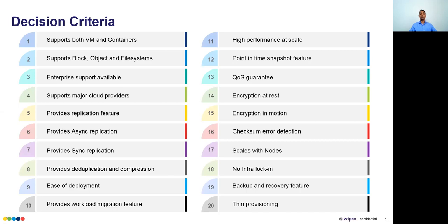Fourth criterion: does it support major cloud providers? If you're running Kubernetes on AWS EKS, you want to know whether the solution works with EBS volumes, or Azure Disk, or whichever cloud provider your organization uses. Fifth: does it provide replication for high availability and disaster recovery? Many solutions support async replication; some also support sync replication for zero data loss.